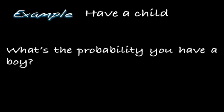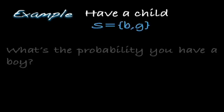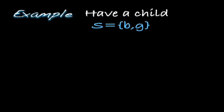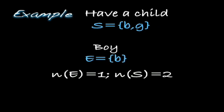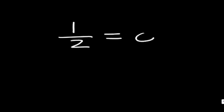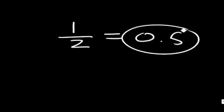When you have a child, what's the probability that you have a boy? There are two outcomes associated with having a child: having a boy or having a girl. The event of having a boy consists of the one outcome, little b. Since there's only one outcome associated with having a boy and there are two outcomes possible, we can determine the probability. There's one outcome corresponding to having a boy out of two possible outcomes. Numerically, this is 0.5. The probability of having a boy is 0.5 when you have a single child.